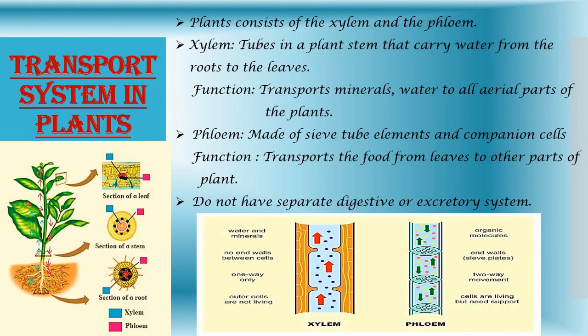Now students, let's learn about the transport system in plants. The transport system of plants consists of the xylem and the phloem. Xylem is a tube in a plant stem that carries water from the roots to the leaves, and it helps to transport minerals and water to all the aerial parts of the plants.